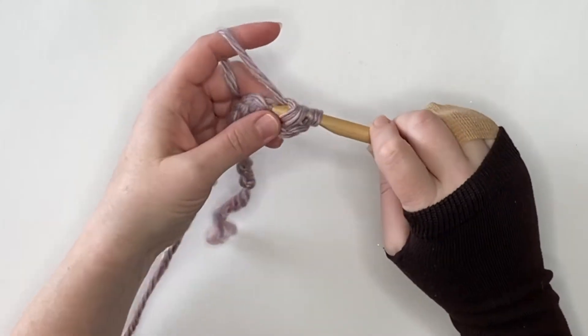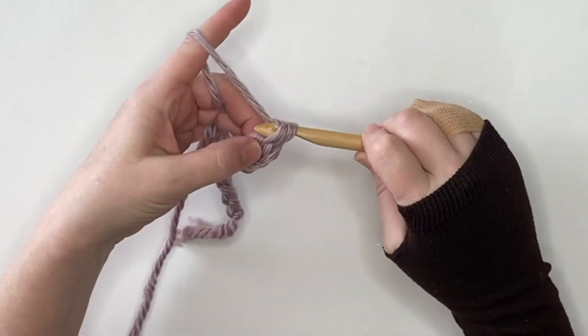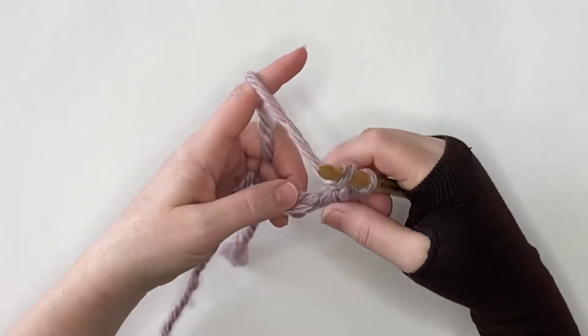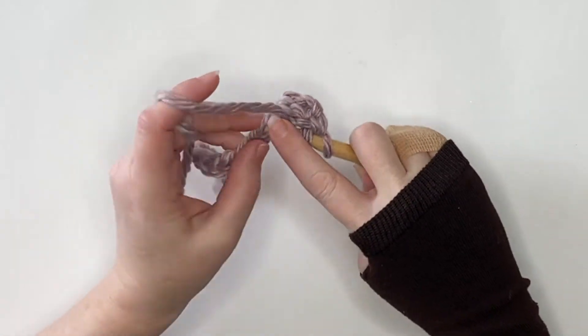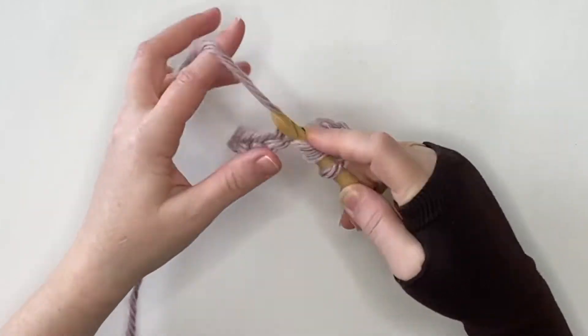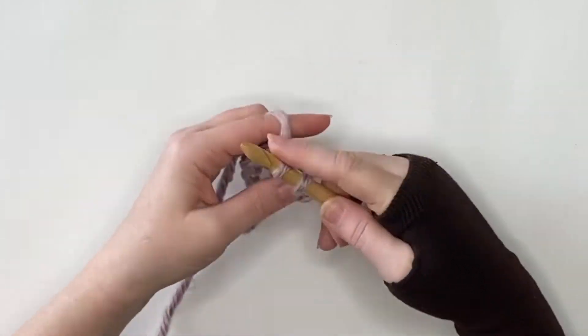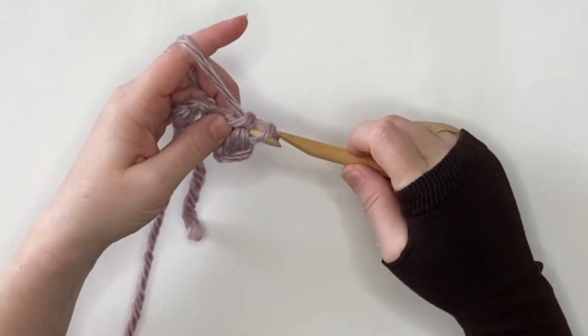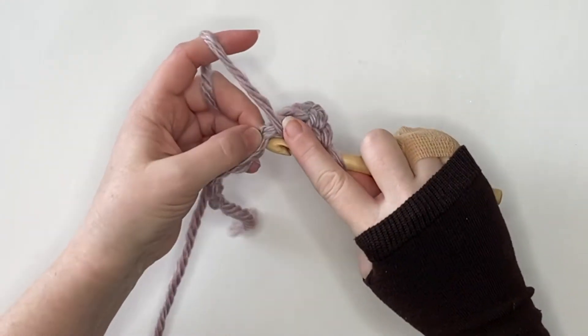Then we're just going to double crochet in the second chain from the hook, and then in every chain stitch thereafter. So that's going to give you nine double crochets including the chain two, and that's going to be our basic shape for our whole scarf—just those nine double crochets.